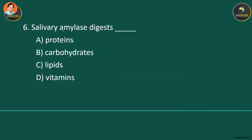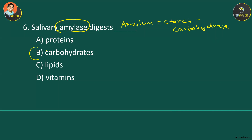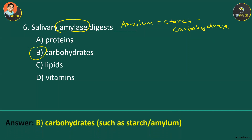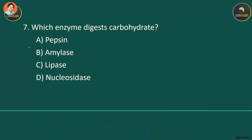Salivary amylase is the name of the enzyme that digests which substrate — A, B, C, or D? Salivary amylase digests amylum, which is the same as starch, and starch is a carbohydrate. So the answer is carbohydrates. A similar follow-up question asks which enzyme digests carbohydrates — the answer is amylase.